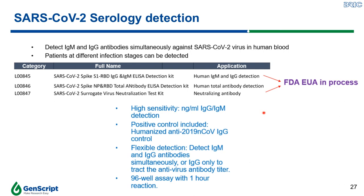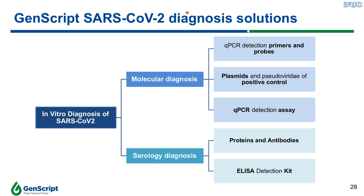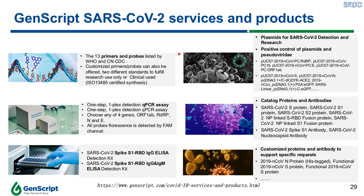In summary, GenScript provides a complete solution for molecular-based and serology-based diagnosis assays, ranging from primers and probes for qPCR assay development, plasmid and pseudovirus positive controls, as well as our own qPCR detection kit. On the other hand, we also provide antibodies and proteins for assay development, as well as our own ELISA detection kit. For those interested, you may access our website for more detailed information.